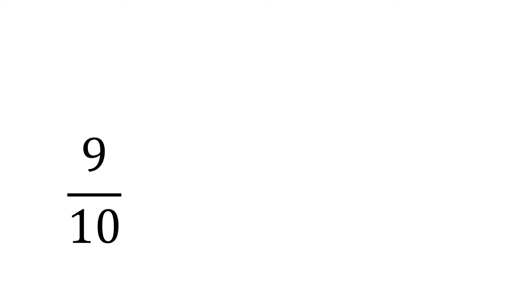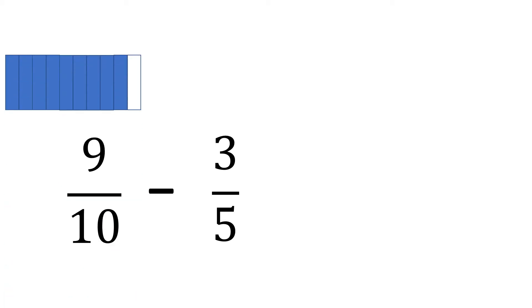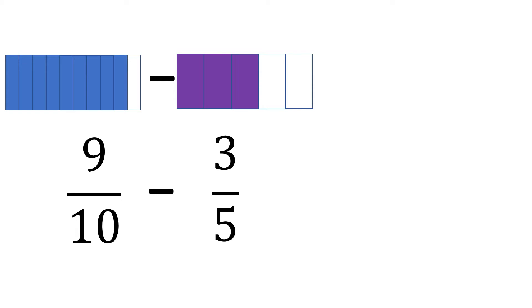How about this example? 9 tenths minus 3 fifths. This time it's not that easy to solve because the denominators are not the same. We cannot just simply subtract numerators. Let's look first at the figures for these two fractions — it's 9 out of 10, and we want to take away 3 out of 5. That looks weird and we cannot solve it because the whole figures don't fit. So how to solve it?